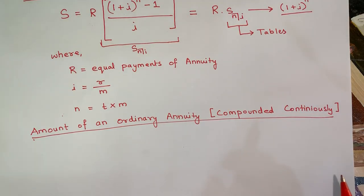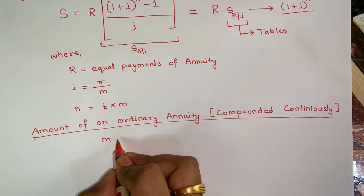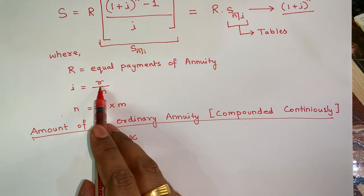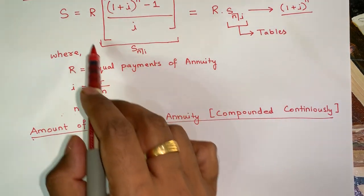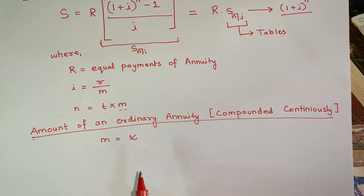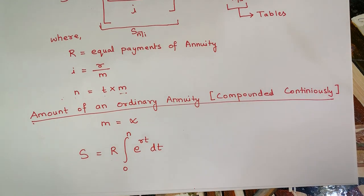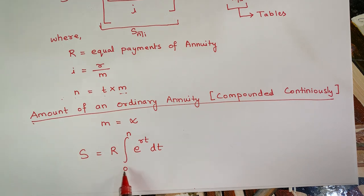Next, we have the amount of an ordinary annuity compounded continuously. When compounding is done continuously, M equals infinity. When M equals infinity, we are unable to find i and N in the standard way, so the formula becomes irrelevant. We need to derive a new formula. The amount of an ordinary annuity compounded continuously is: Amount = R × ∫₀ⁿ e^(RT) dt.